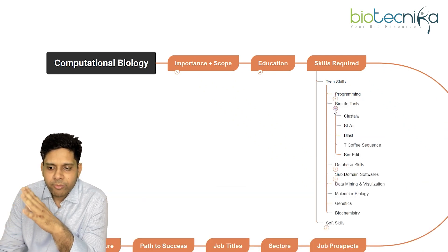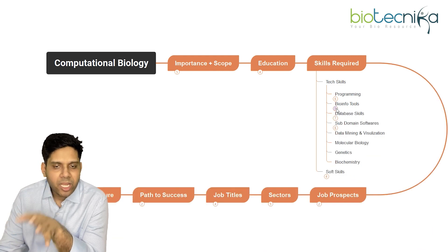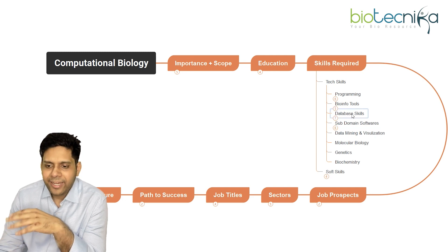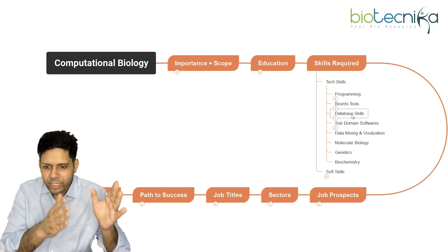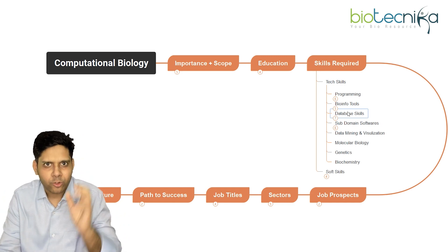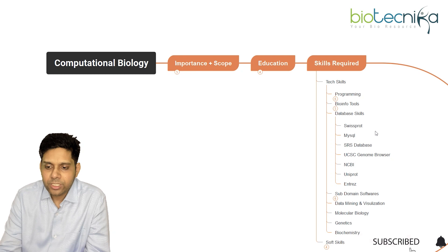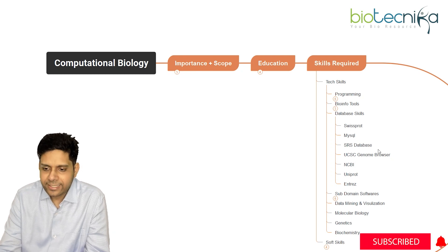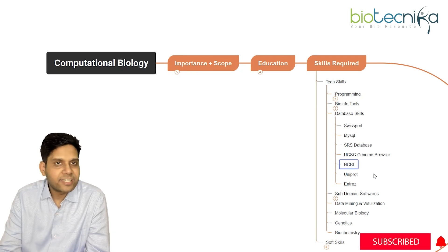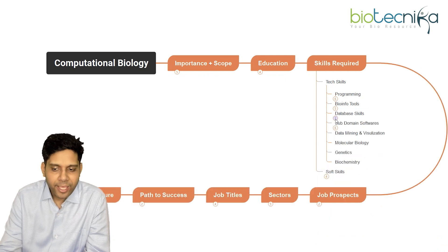Next are bioinformatics tools like Cluster, BLAST, T-Coffee Sequence, and BioEdit. Don't get scared — you have to study these over a period of about 10 years, not overnight. Database skills are also important: SwissProt, MyScale, SRS Database, UCM, SC, Genome Browser, NCBI, Uniprot, and Interace — these are the database skills you should have.